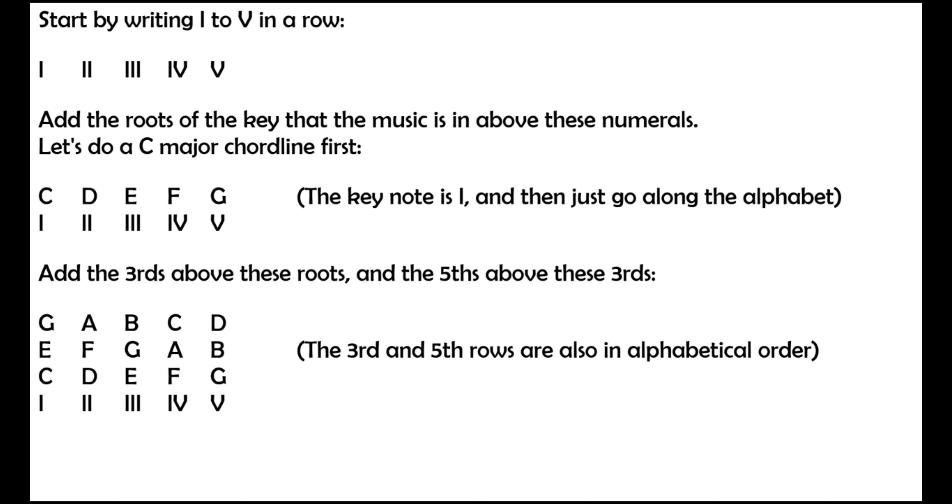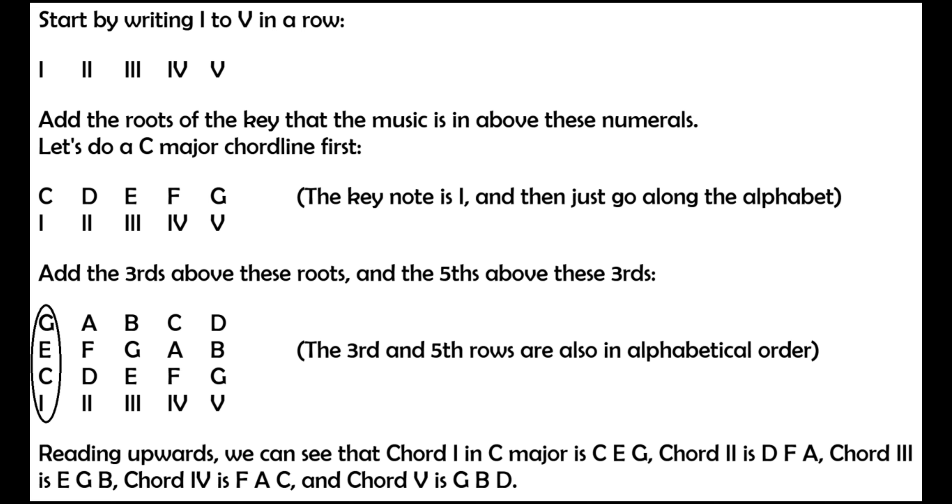Reading upwards, we can see that chord I in C major is C, E, G. Chord 2 is D, F, A. Chord 3 is E, G, B. Chord 4 is F, A, C. Chord 5 is G, B, D.